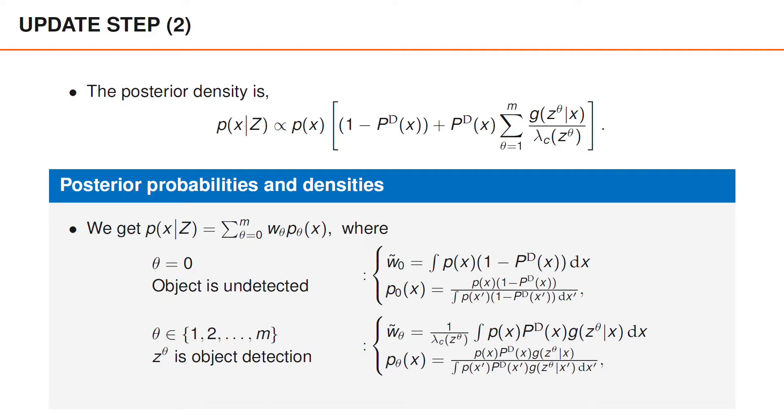In this case, the λ_c factor cancels out and we are left with p(x) times P^D(x) times g(z_θ|x) divided by the integral of the same function. To obtain the normalized weights w_θ, we simply normalize the weights w̃_θ.